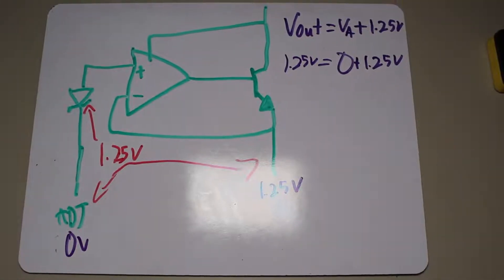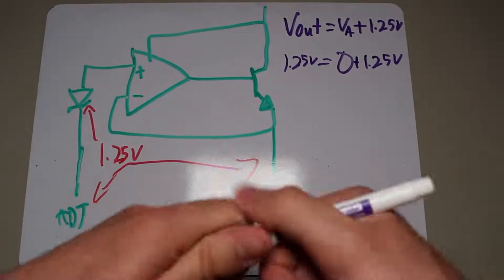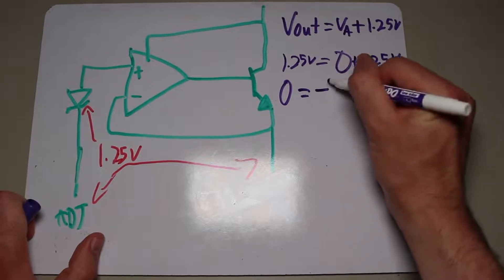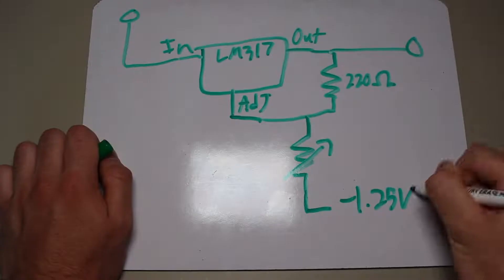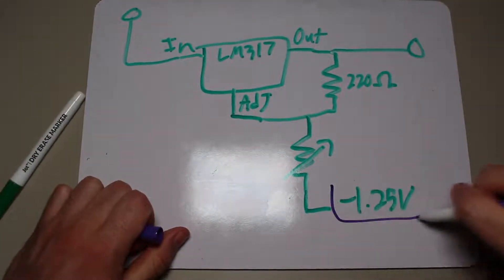However, if we replace the ground in this case with negative 1.25 volts, we are able to bypass the voltage offset and make the LM317 regulate down to zero volts. You can generate this negative voltage by using an LM337 for example. So yes, you can output zero volts with a little work concerning negative voltages.